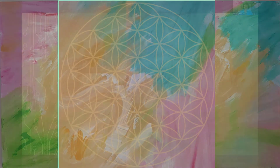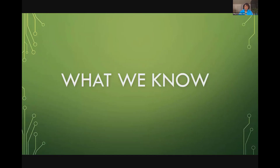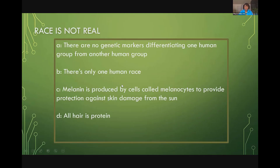Let's talk about the role of history in the plight of freedom. What do we know when it comes to race and racism? One of the things we know is that there are no genetic markers — so race is not real. Racism, the little child of race, actually is real; racism is very real. We're going to talk about that, but race itself — there are no genetic markers differentiating one human group from another.